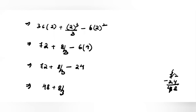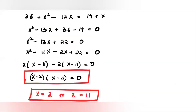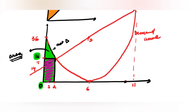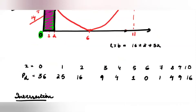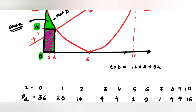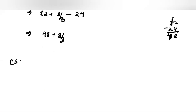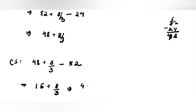Now I still need to subtract the rectangle below the price line to get the net consumer surplus. The rectangle has dimensions 16 × 2 = 32. So consumer surplus = (48 + 8/3) − 32 = 16 + 8/3 = 48/3 + 8/3 = 56/3. That is your consumer surplus.